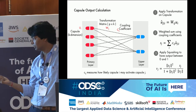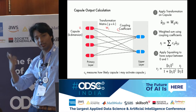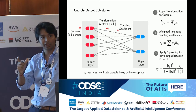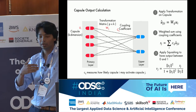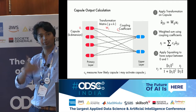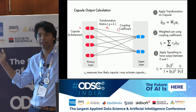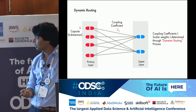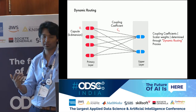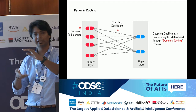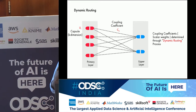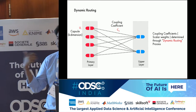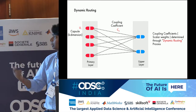The squashing function is a very novel and intelligent approach. It takes the vector, does not change the direction but alters the length, making it between 0 and 1, so you are always dealing with probabilities. For training, unlike a typical neural network which uses backpropagation, capsule networks use another technique called dynamic routing, where we try to adjust the coupling coefficients. This is also known as routing by agreement.